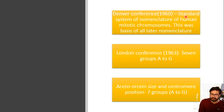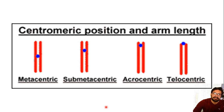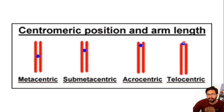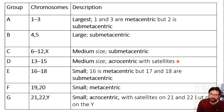At the London Conference in 1963, chromosomes were divided into seven categories — A through G — based on their length and the position of the centromere. When the centromere is in the middle giving equal arms, it is metacentric; a slightly off-center position giving a longer q arm is submetacentric; when the centromere is near the periphery it is acrocentric; and when at the very tip with essentially no p arm, it is telocentric.